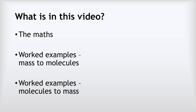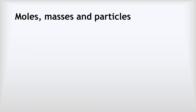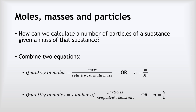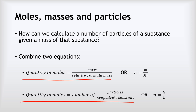In this video we're going to have a quick overview of the maths, then look at some worked examples of how to convert a mass into a number of molecules, and then working backwards to find the number of molecules from a given mass. We combine two equations: the first is quantity in moles equals mass divided by relative formula mass, and the second is calculating quantities in moles given numbers of particles and Avogadro's constant.